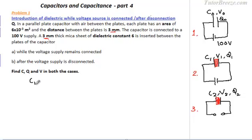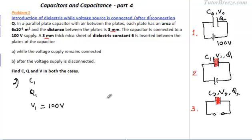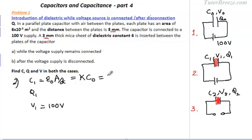Now let's look at C1, Q1, and V1 in the second case. The voltage remains 100 volts since the power supply stays connected. When the dielectric is introduced, the capacitance changes. The capacitance does not depend on Q and V — it is epsilon_0 times A over D, and with a dielectric it becomes the dielectric constant kappa times the original capacitance C0. So C1 is 6 times 18 picofarad, which equals 108 picofarad.